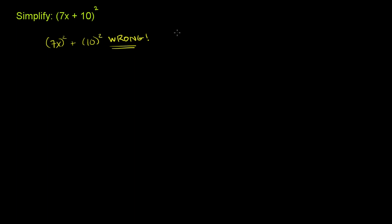What your brain is doing is thinking, oh, if I had 7x times 10 and I squared that, this would be 7x squared times 10 squared. We aren't multiplying here. We're adding 7x to 10.